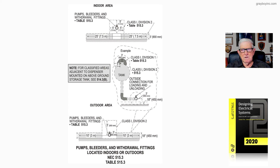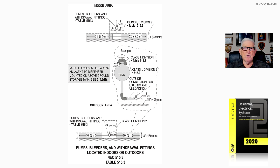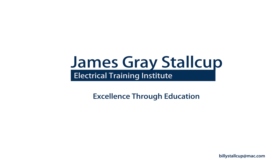Then 18 inches up, you're in a Class 1 Division 2 area. This outlines and describes what is considered the classified area — both for indoor and outdoor areas — in accordance with pumps, bleeders, and withdrawal fittings per NEC 515.3 and table 515.3 in the 2020 edition of the NEC. That's all.